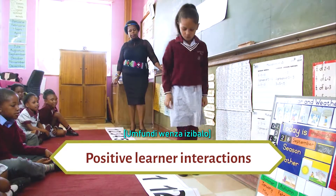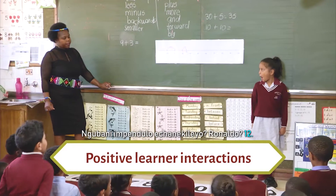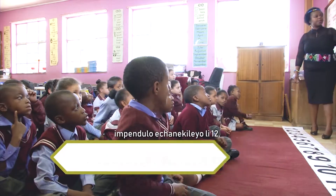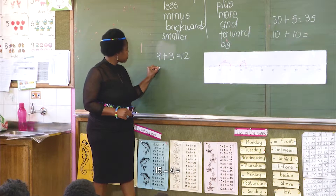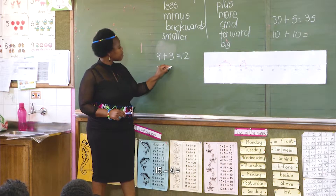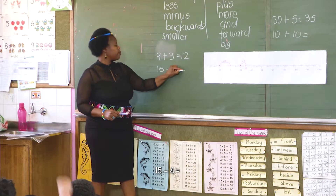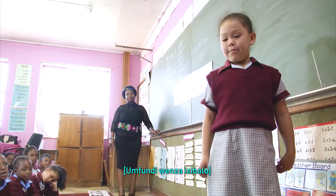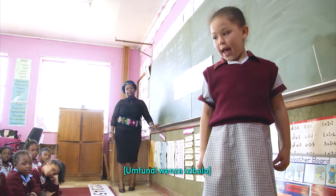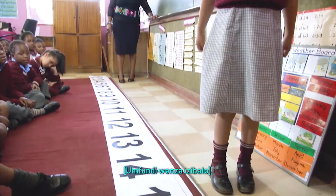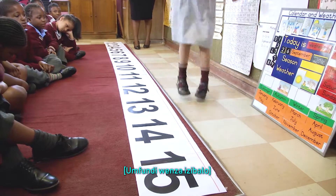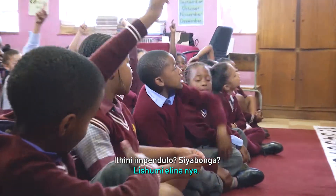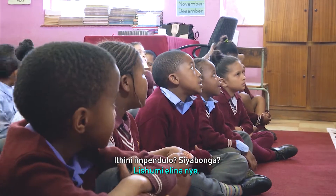I'm standing on nine and I'm going to jump three jumps: one, two, three. What's the answer, class? Twelve. Then: fifteen minus four. I'm standing on 15 and I jump four numbers backwards: one, two, three, four. What is our answer? Eleven.